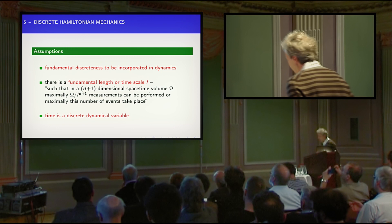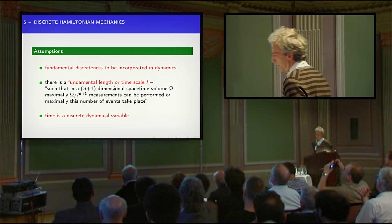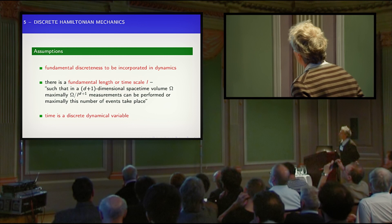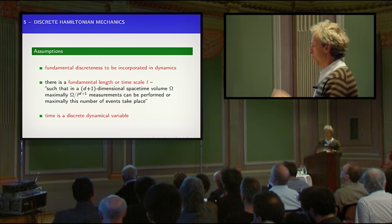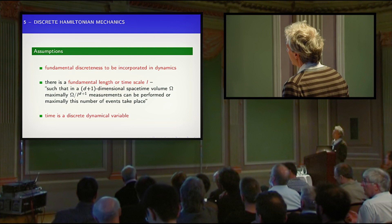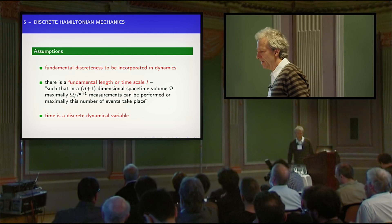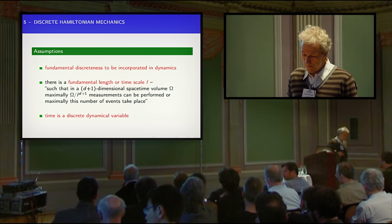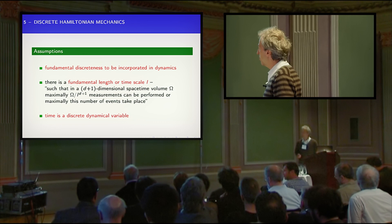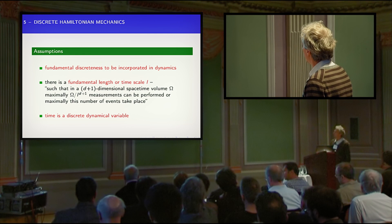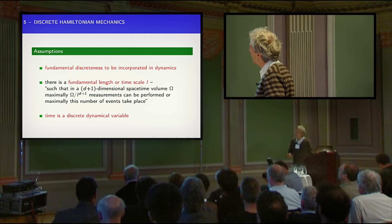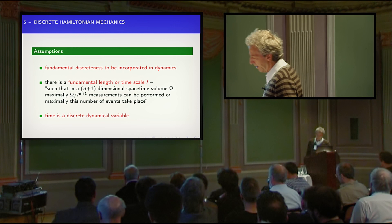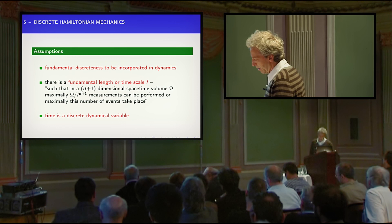The assumptions are that there is a fundamental discreteness to be incorporated in the dynamics. This has been explicitly said by T.D. Lee in this way. That means we have a fundamental length or time scale — there is a certain cutoff on the number of events that can take place in a given space-time volume or on the number of measurements which you can do. This is actually the starting point in the model of Sorkin and collaborators in the so-called causal sets. Finally, what is important is that time is a discrete dynamical variable for me.